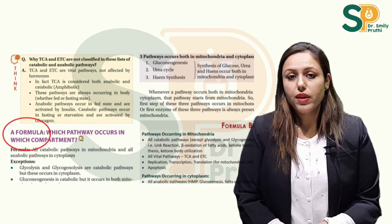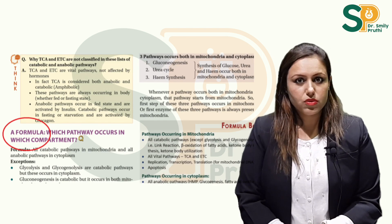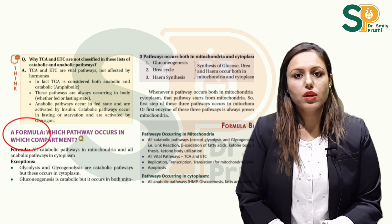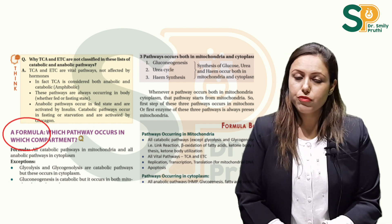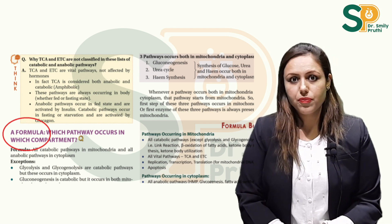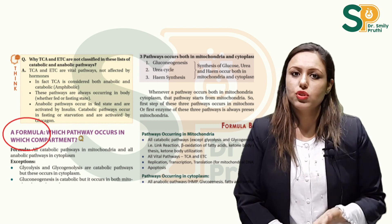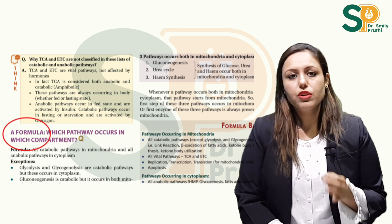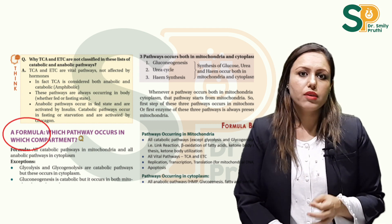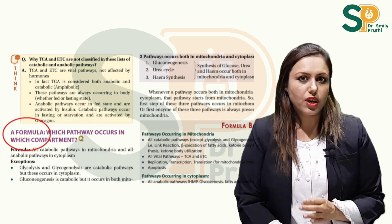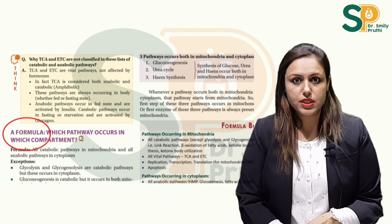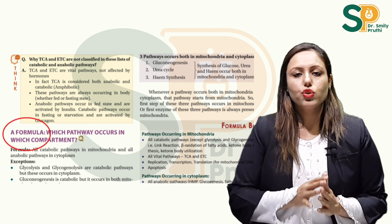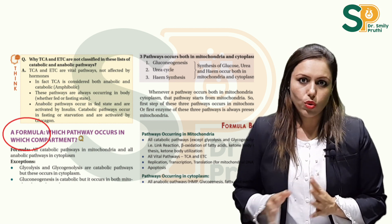There is a formula about anabolic and catabolic pathways — which hormone, insulin and glucagon, activates which enzyme and which pathway; which pathway occurs in which compartment of the cell; and which enzyme is active in the phosphorylated and dephosphorylated state. A general formula is given which you can apply to all the questions.